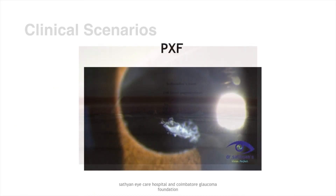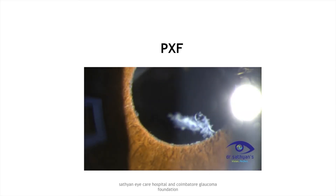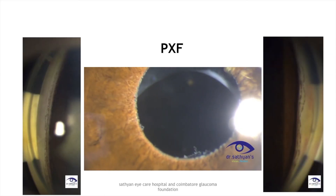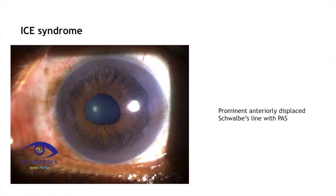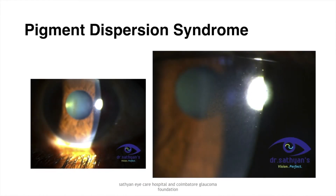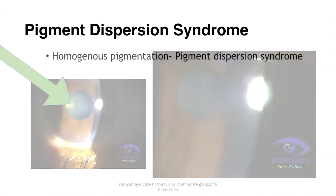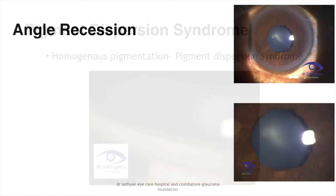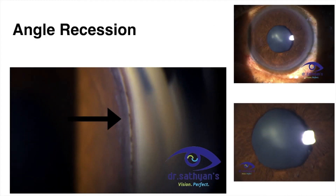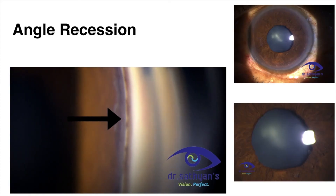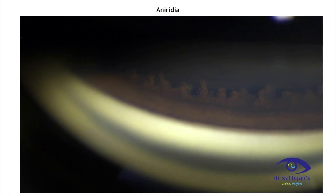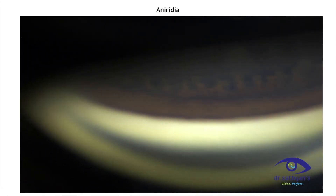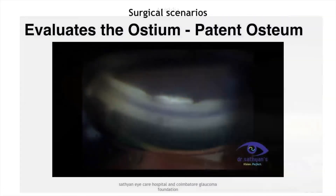In common clinical scenarios: in a PXF patient, gonioscopy may reveal a Sampaolesi line. In ICE syndrome patients, a prominent anteriorly displaced Schwalbe's line with PAS may be noted. In pigment dispersion syndrome, homogenous pigmentation of the trabecular meshwork is seen. In patients with a history of trauma, angle recession with a broad ciliary body band and disinserted iris processes should be ruled out. Cases of aniridia and congenital glaucomas may reveal an anteriorly displaced rudimentary iris stump.